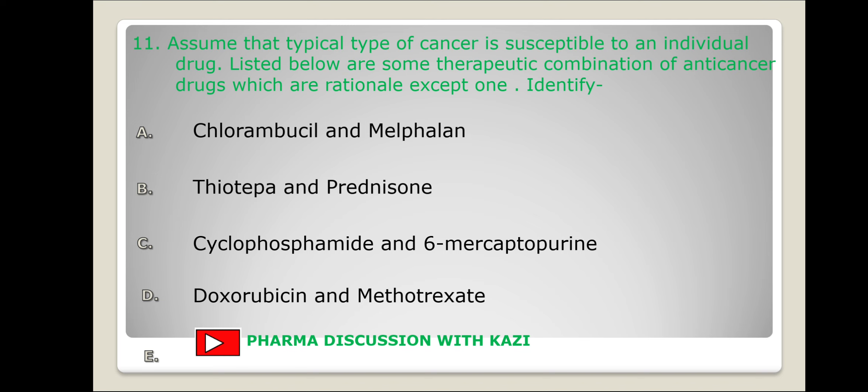Next question: assume that a typical type of cancer is susceptible to an individual drug. Listed below are some therapeutic combinations of anti-cancer drugs — which are rational except one? Three are rational and one is irrational; we have to find the irrational one.